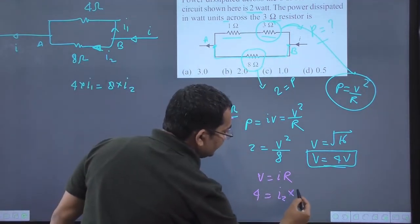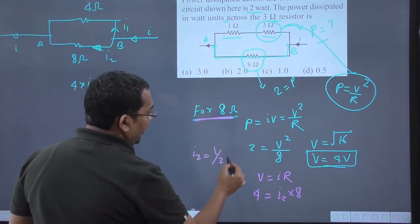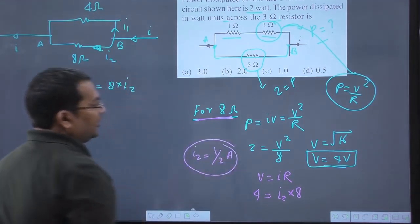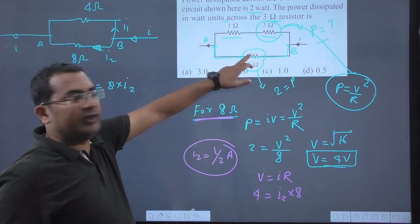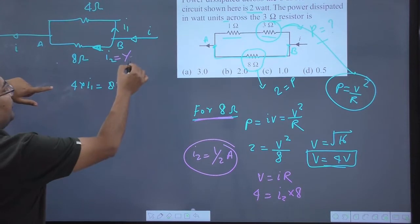The resistance is 8 ohms, so the value of I2 comes out to be 1 by 2 ampere, half ampere. The current in this is half ampere, so I2 equals half ampere.